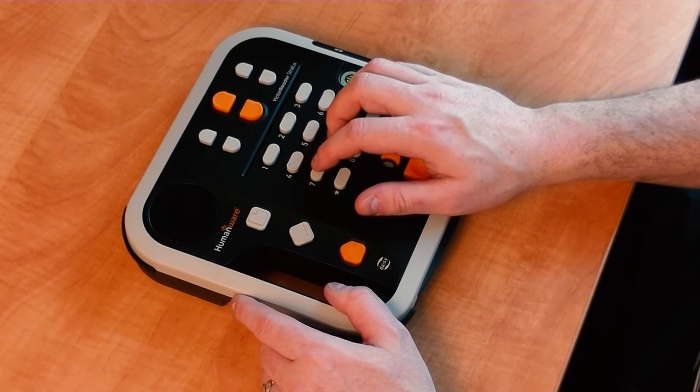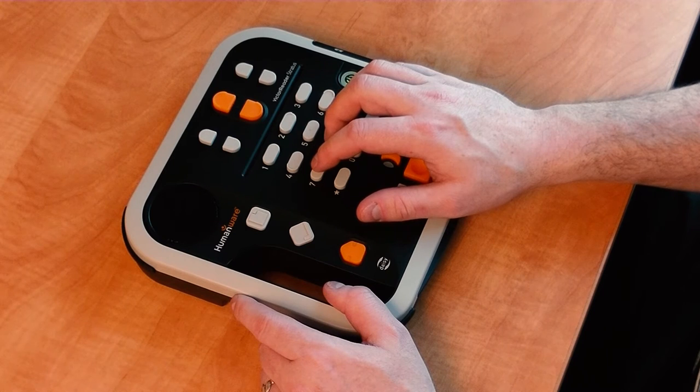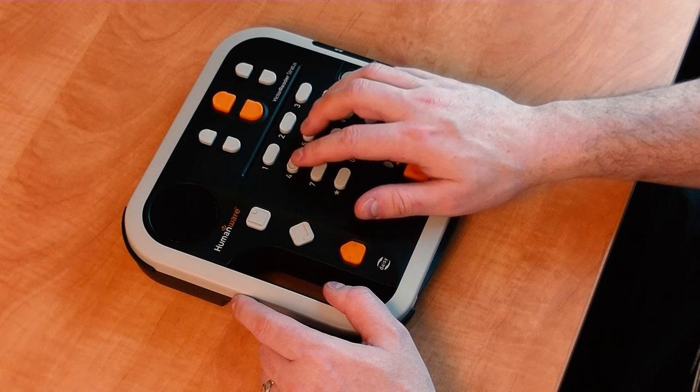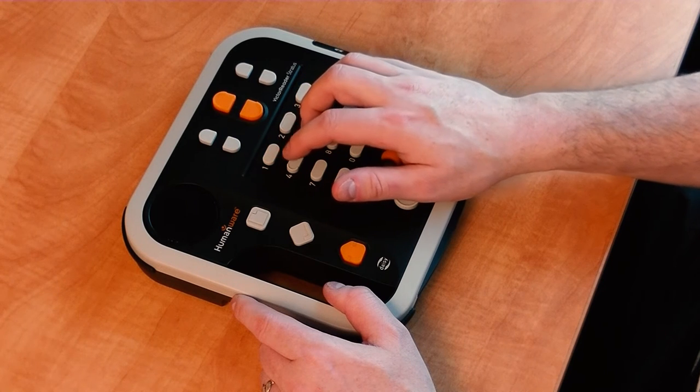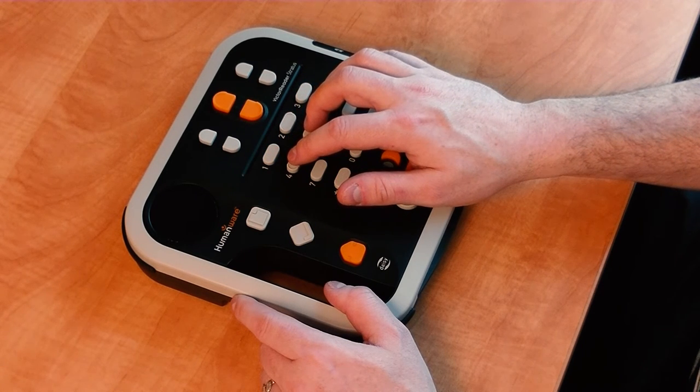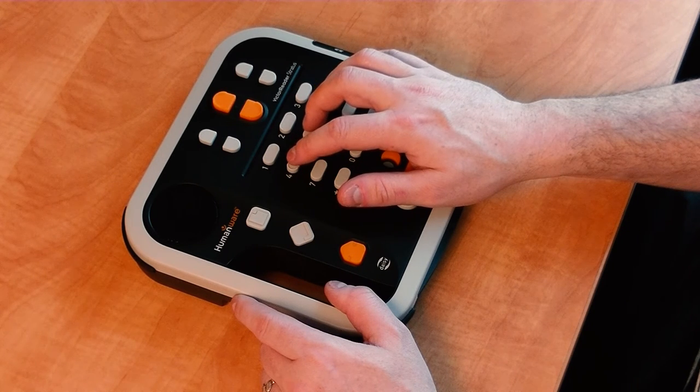The Victor Reader 12M also supports the CNWE direct-to-player service. So to access that I'm going to press the 1 key to get to my bookshelf. Bookshelf. DAISY online. So there's my DAISY online.